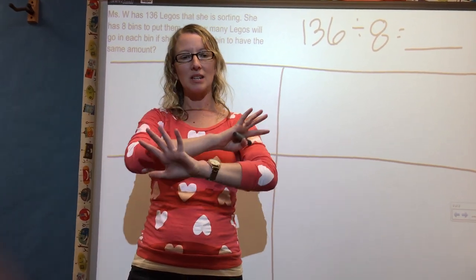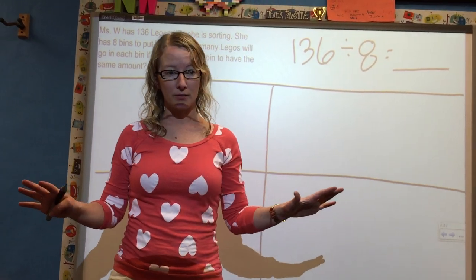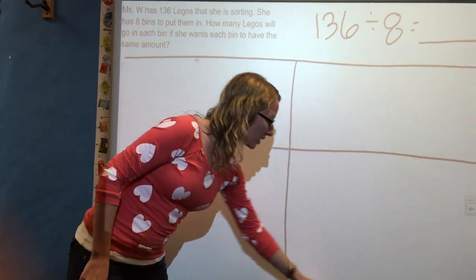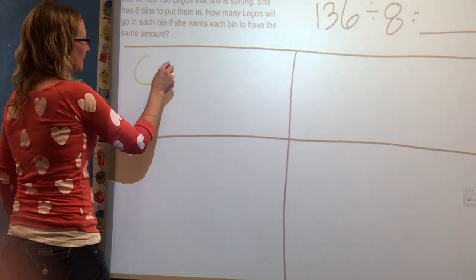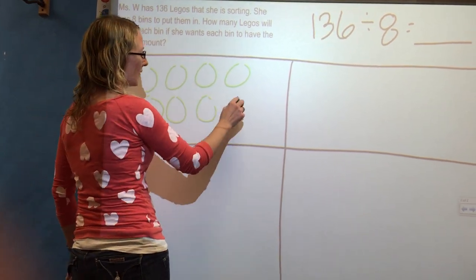And one of the best strategies, the most easy and obvious strategies, is to model it. Right? We're going to model it. So we could just draw our bins. How many bins do we have? Eight. Eight. I've got eight bins.